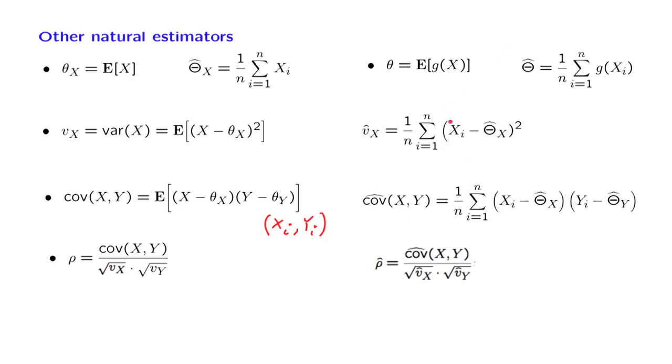All of these ways of forming estimates can be shown, we are omitting the details of the argument, but hopefully you get the idea by now, all of these quantities are consistent estimators. That is, when the sample size goes to infinity, they approach the correct values of what we're trying to estimate.